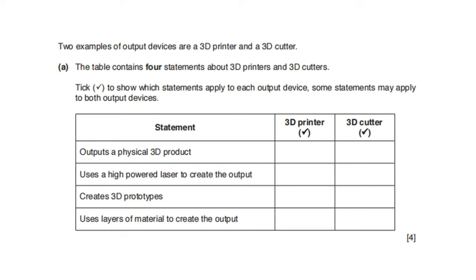Two output devices are 3D printer and 3D cutter. Four statements — tick which apply to each, some may apply to both. Outputs a physical 3D product — both 3D printer and 3D cutter. Uses a high-powered laser to create the output — 3D cutter only. Creates 3D prototypes — both 3D printer and 3D cutter. Uses layers of material to create the output — 3D printer only.